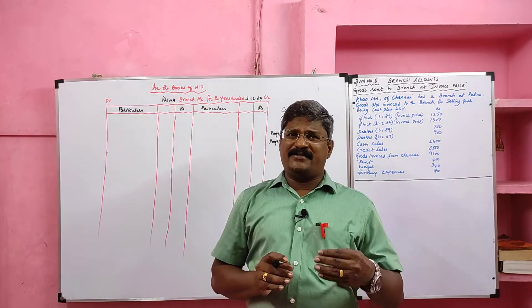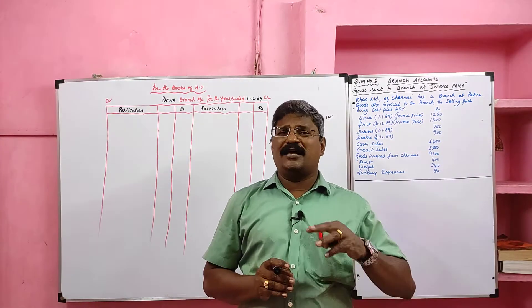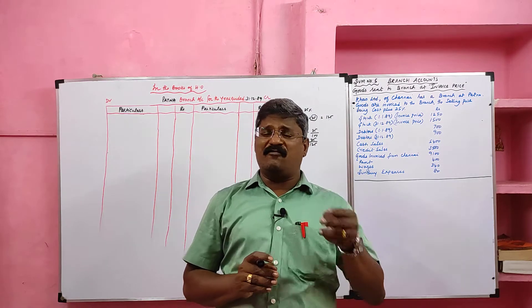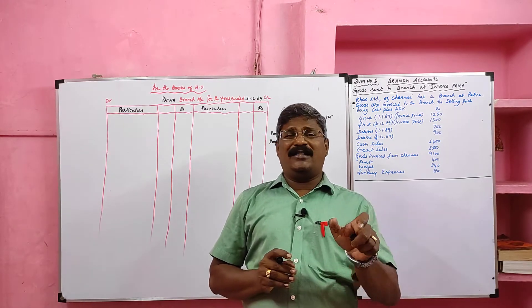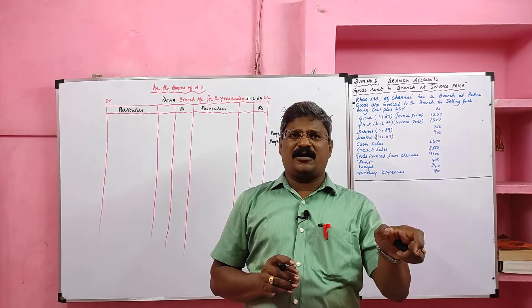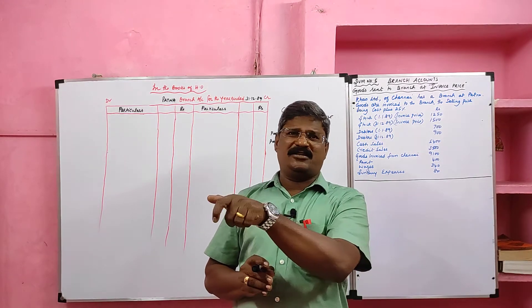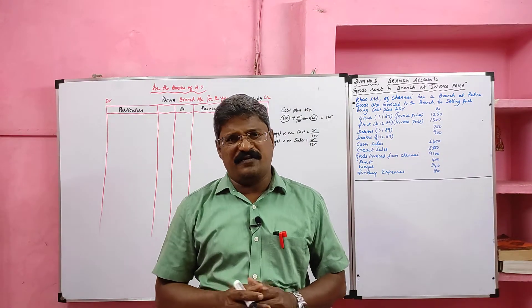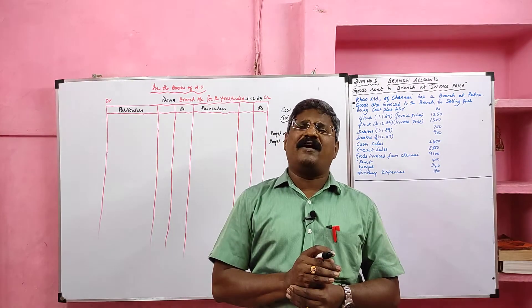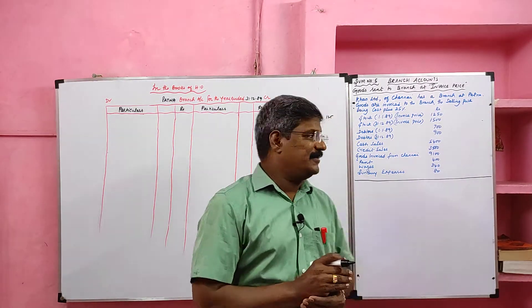The invoice price is more than the cost price, so there is a difference between cost price and invoice price. That excess profit is included in opening stock, goods sent to branch, closing stock, and goods returned to head office. We should remove that excess profit, then only we can show the fair profitability of the branch.